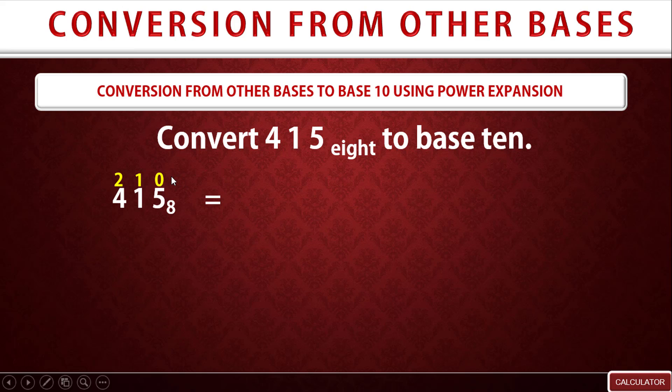Okay, the next thing to do now is to take the first digit, multiply by the base, and then raise the base to the power on top of the digit. So that means we have 4 × 8^2, then we say plus.